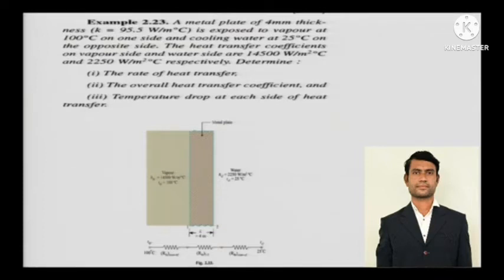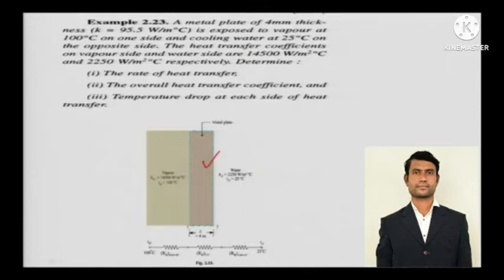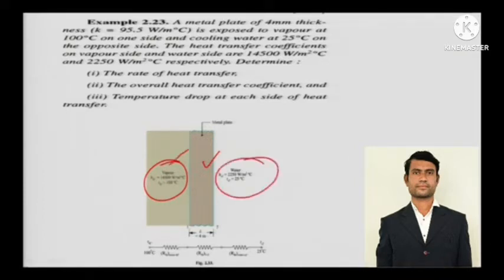In the diagram you can see two composite walls — two materials conjoined to form one composite wall. The metallic plate of 4 mm thickness is exposed to vapor at 100 degrees Celsius on one side — that is the ambient on that side. On the other side is cooling water at 25 degrees Celsius. So one side is vapor and the other side is water.